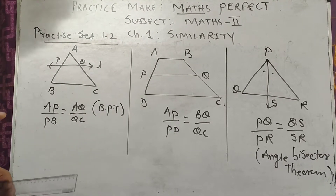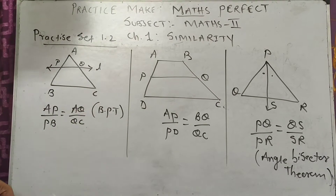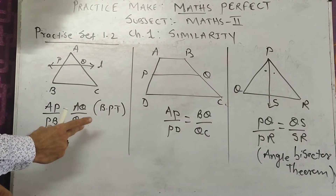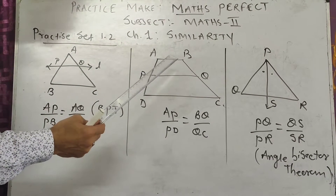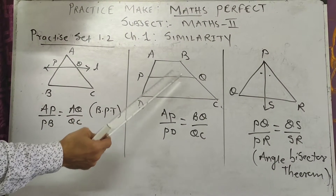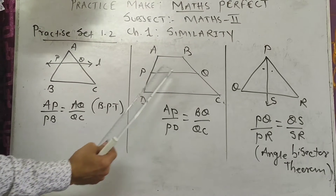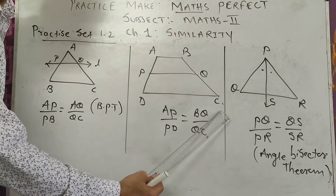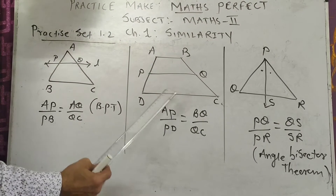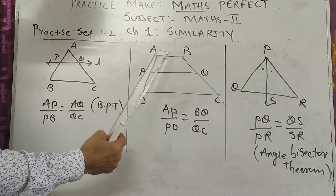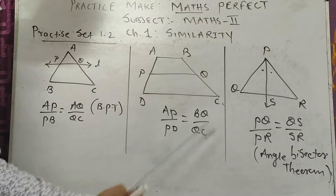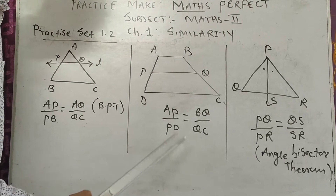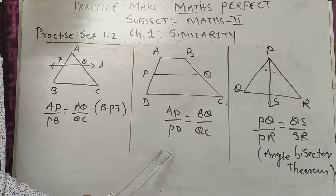In BPT, line L is parallel to BC — that is given first, and then you find the ratio. Second concept is intercepts made by three parallel lines. AB is parallel to PQ, PQ is parallel to BC — these three lines are parallel. So intercepts made by three parallel lines means: AP upon PD is equal to BQ upon QC. This is called intercepts made by three parallel lines.